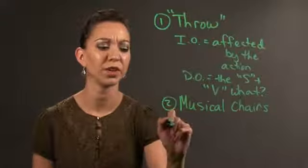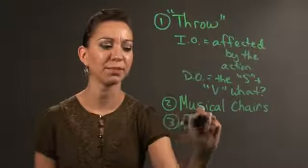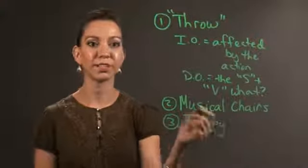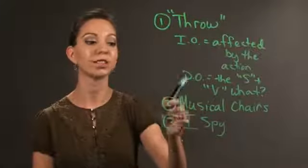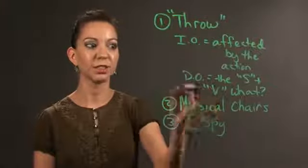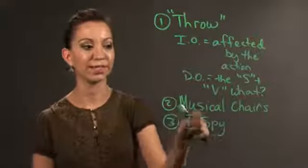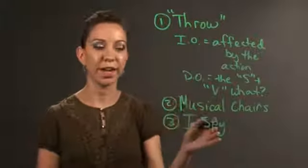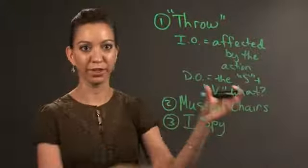The final one you can do is, once again, a common game called I Spy. I Spy is a good one to use, especially when you're first trying to teach direct objects. Direct objects, once again, are subject, verb, what. So if they're saying I spy something red, and they see in the corner like a flower...